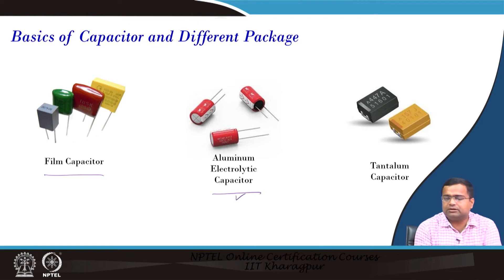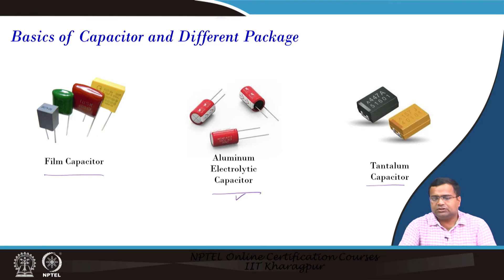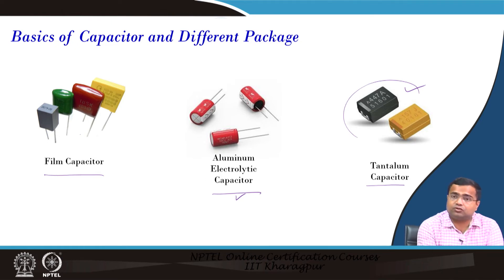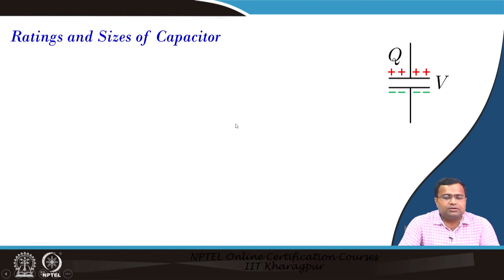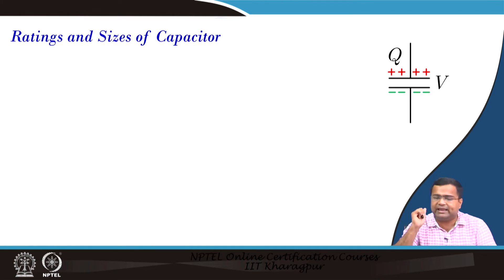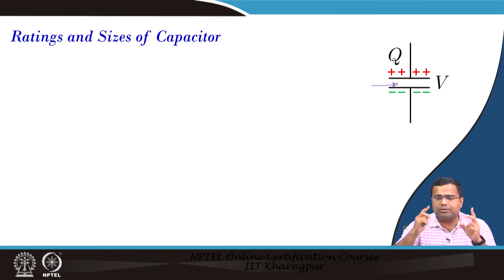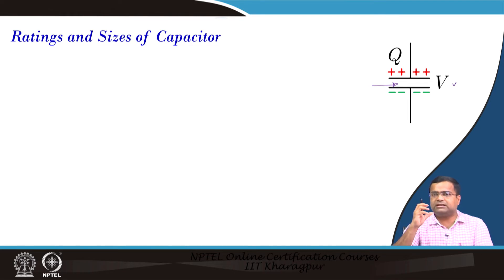Tantalum capacitors are a bit expensive. Aluminum capacitor is through-hole but it can be SMD also. Now, we want to understand the basics of the capacitor. Any capacitor has two conducting plates with a dielectric in between. There are different types of dielectric material. For any capacitor you choose, you have to decide two things: the voltage rating of the capacitor and the capacitance value. The capacitance value is nothing but your charge storage divided by the voltage — C into V equals Q.